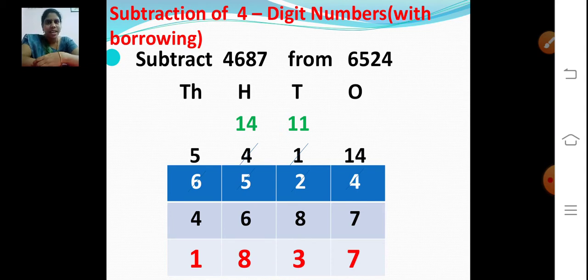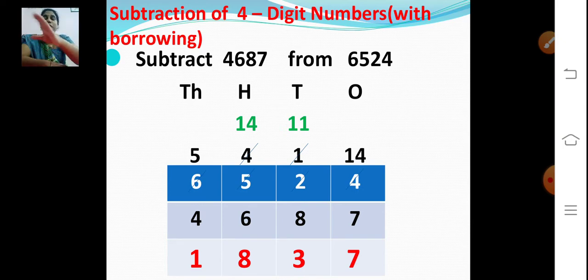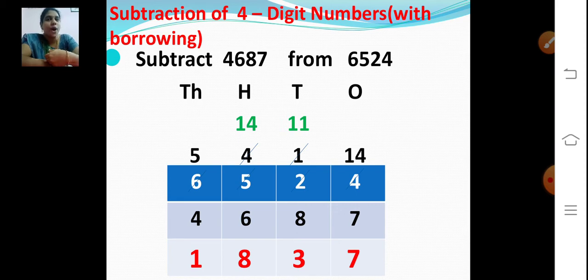What do you mean by borrowing? I think you all have studied in your previous class. Now, can you subtract 8 from 2? You cannot subtract, right? In that case, what you have to do? You have to borrow one from the previous place, whether it is hundreds or tens. That is called borrowing — we borrow to subtract a bigger number from a smaller one.